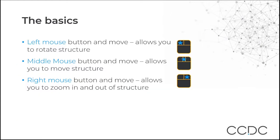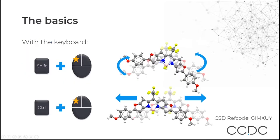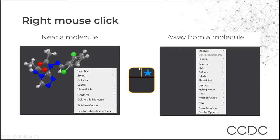The ref code is our database reference code, and structures with the same substance are assigned the same six-letter code plus an additional two numbers. If you want to navigate to a particular ref code, you can type it in the structure navigator box at the top right. Left mouse button and move allows you to rotate the structure. Middle mouse button and move allows you to move your structure. Right mouse button and move allows you to zoom in and out. You can also use the keyboard in combination with your mouse — shift and left mouse, or control and left mouse. Right-clicking near a molecule or away from a molecule gives different menu options to change display settings.